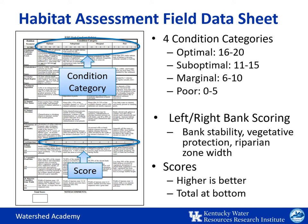Each habitat parameter is rated using four condition categories: poor, marginal, suboptimal, and optimal. These must be carefully read to determine which one most closely matches the observed condition in your stream. Within each condition category, users assign one of five numerical scores to represent how closely the condition matches that category's description. For some parameters, such as bank stability, vegetative protection, and riparian zone width, each stream bank is assessed separately.